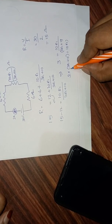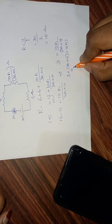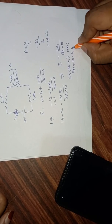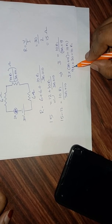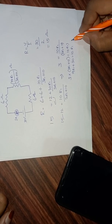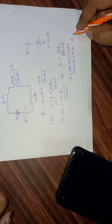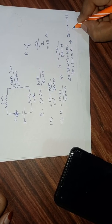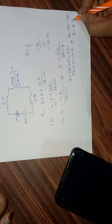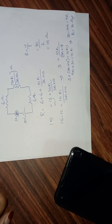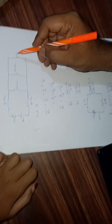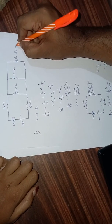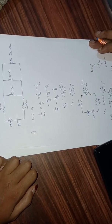Expanding the bracket: 3 × 3R1 = 9R1 and 3 × 10 = 30, so 9R1 + 30 = 10R1. Taking 9R1 to the other side: 30 = 10R1 - 9R1, therefore R1 = 30 ohms. So the value of the unknown resistor R1 is equal to 30 ohms.